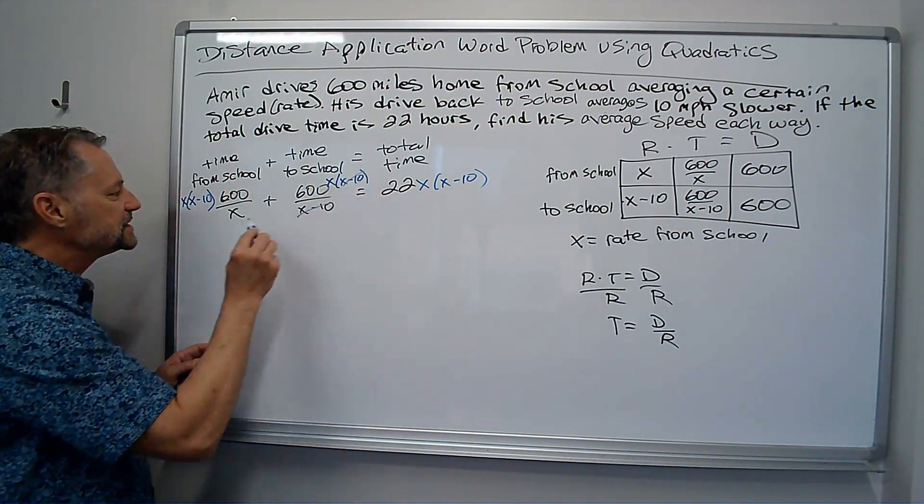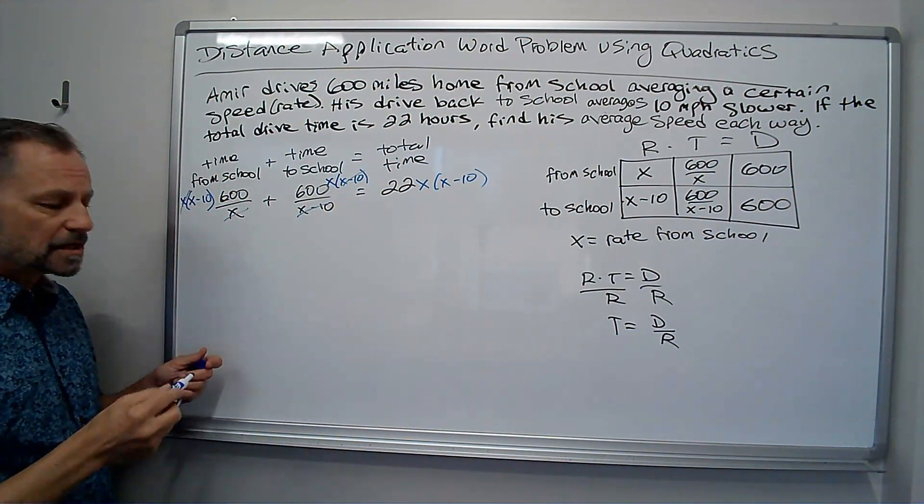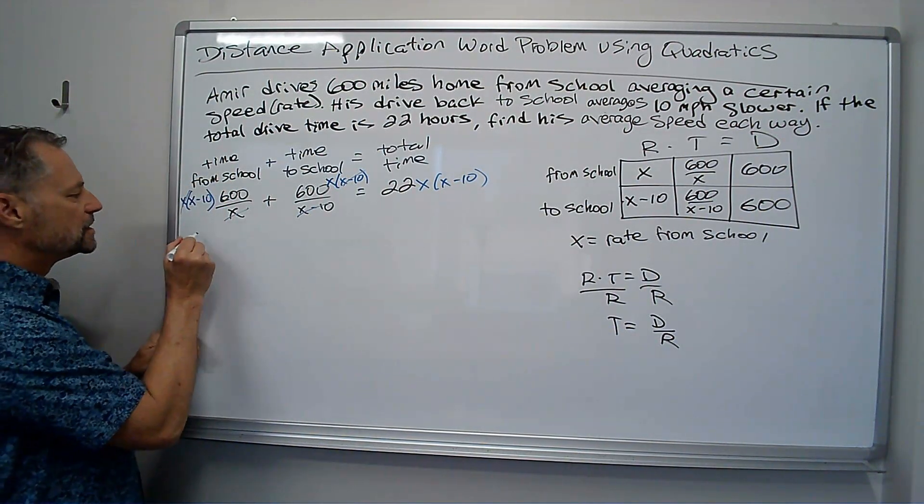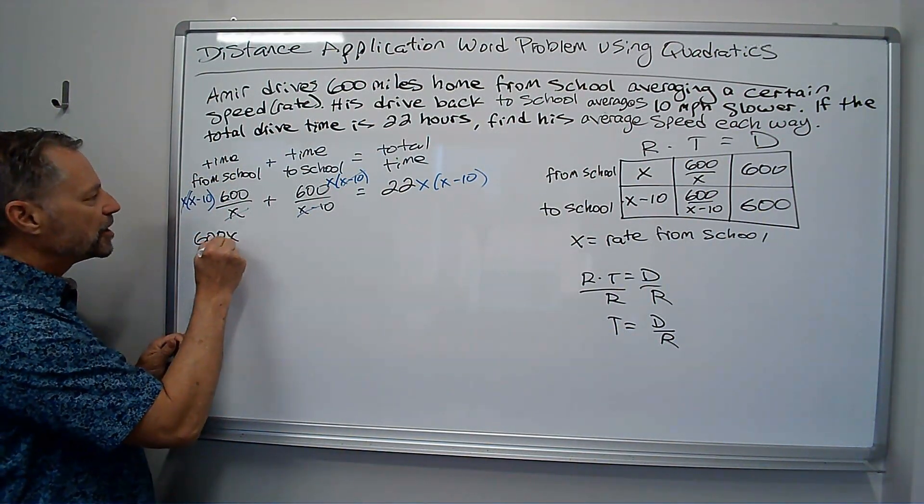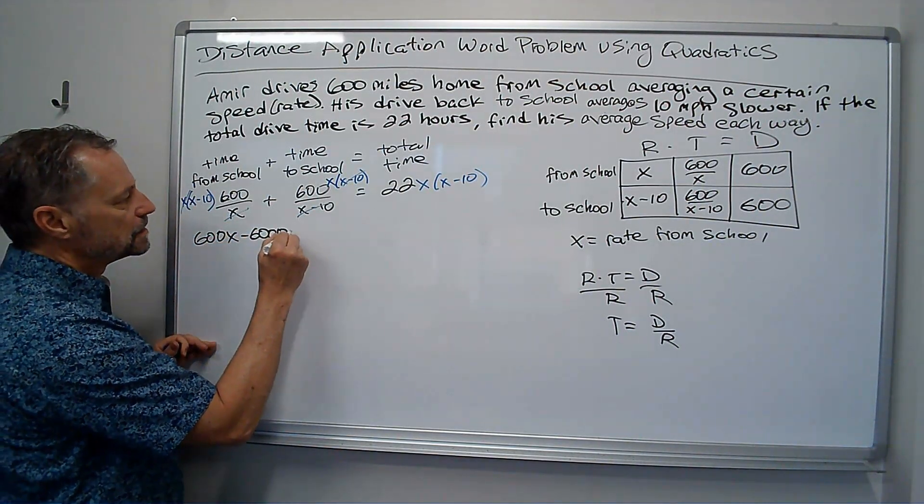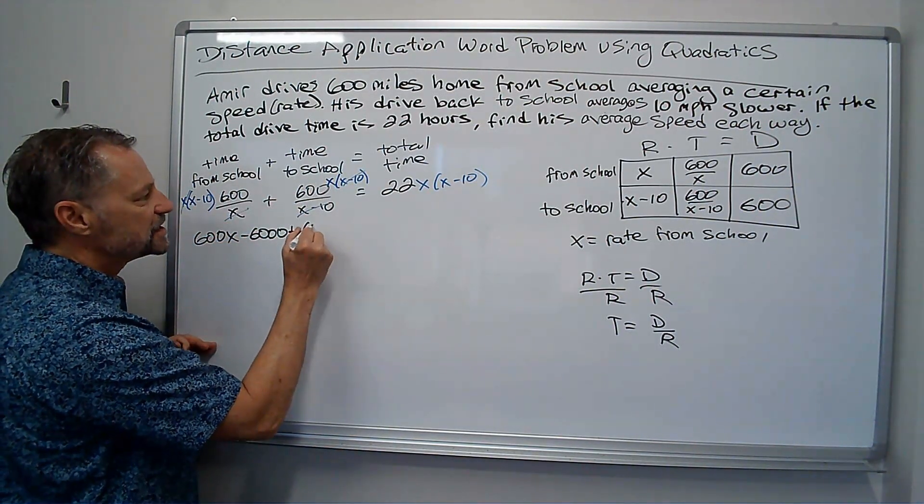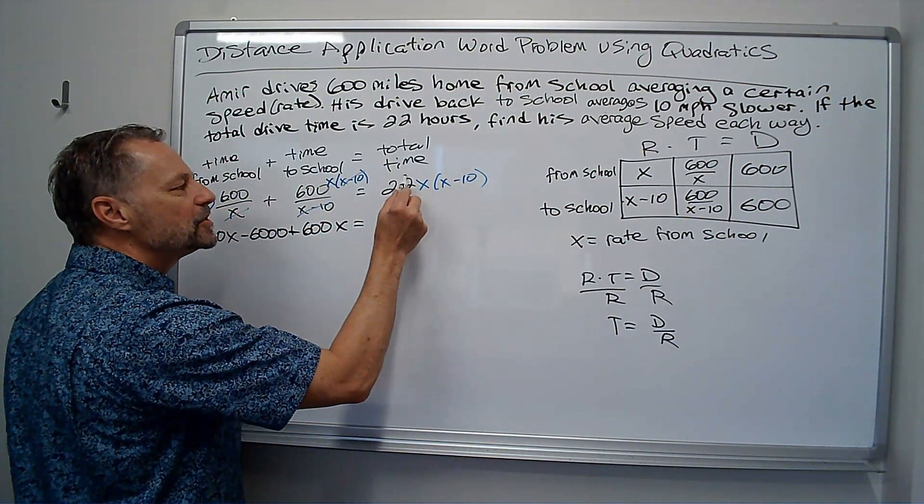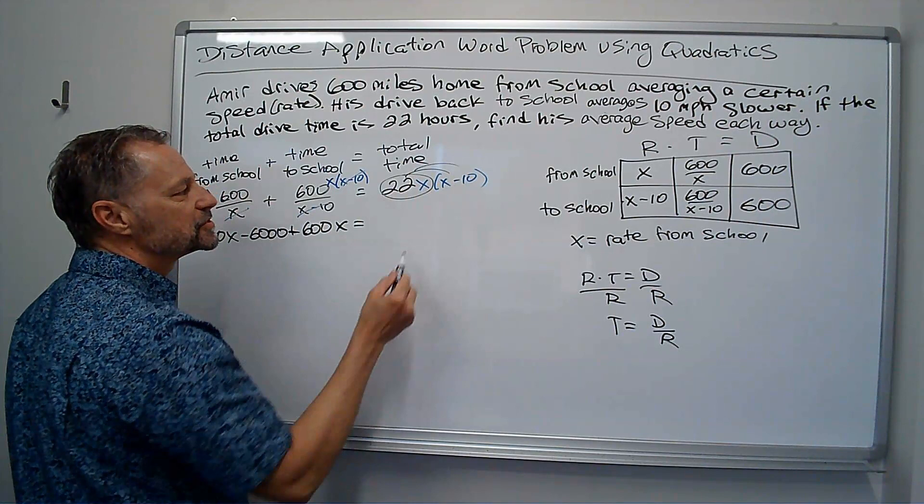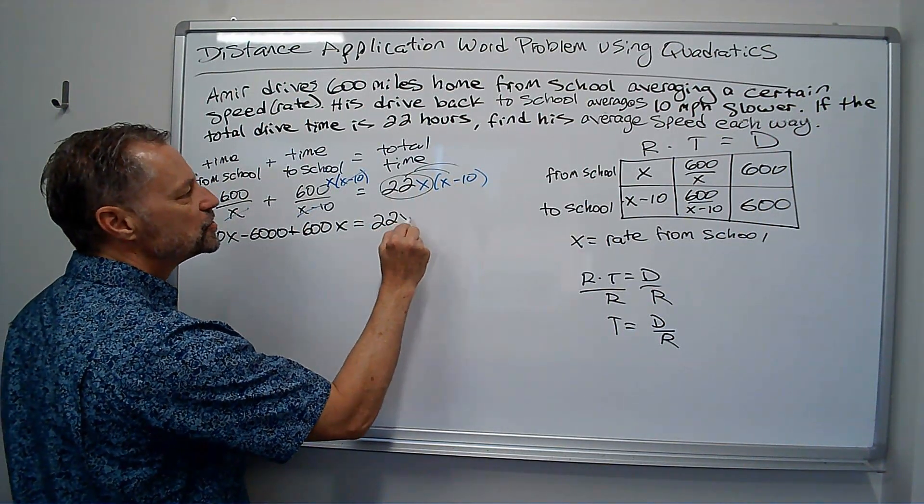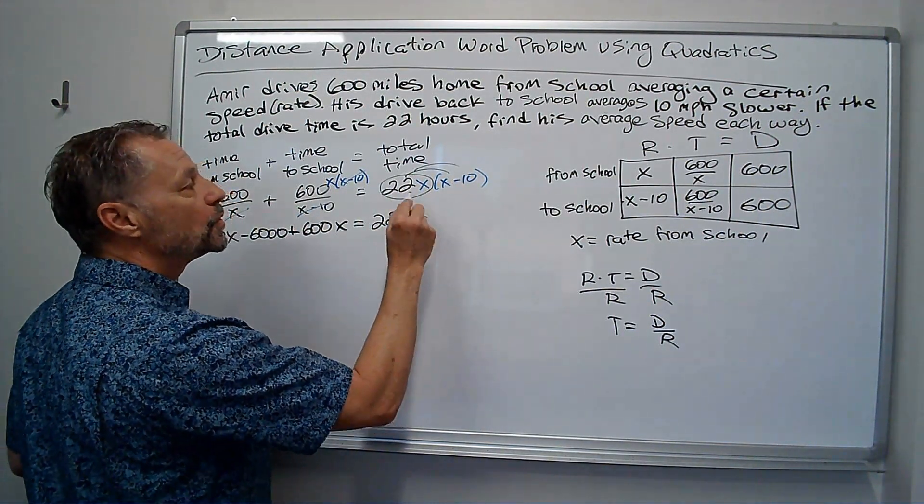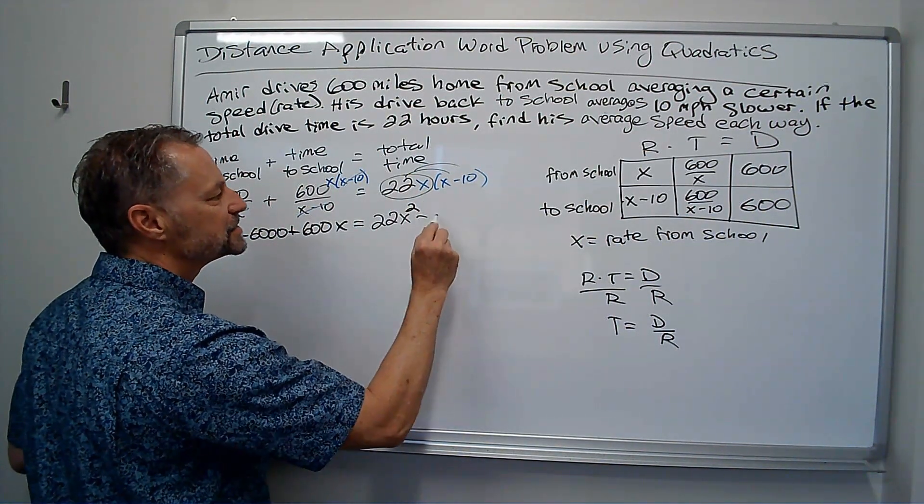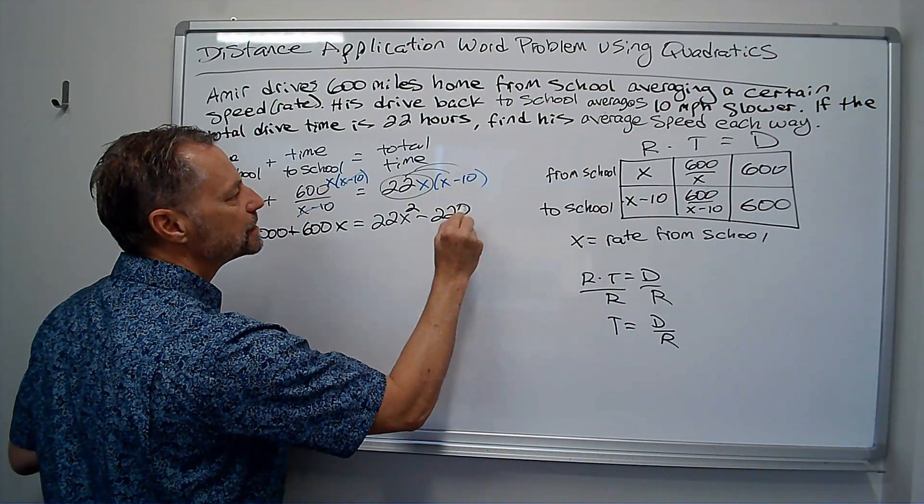So, here the X minus 10's cancel. Here the X's cancel. So, I'm going to multiply through. I get 600X minus 6,000 plus over here it's just 600X equals, and I'm looking at this 22X as a certain thing. I'm just going to multiply through there. 22X squared minus 22X times 10 is 220X.